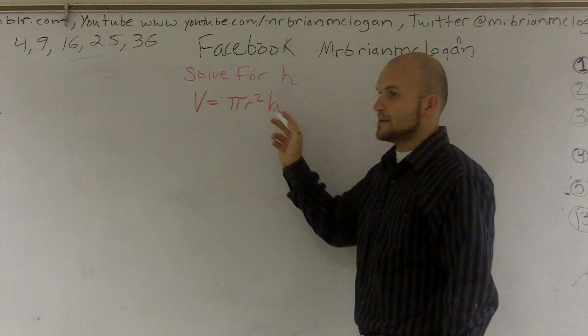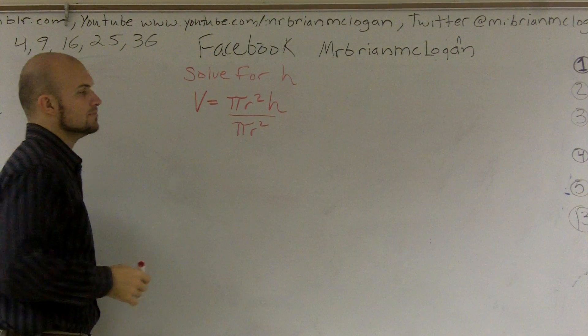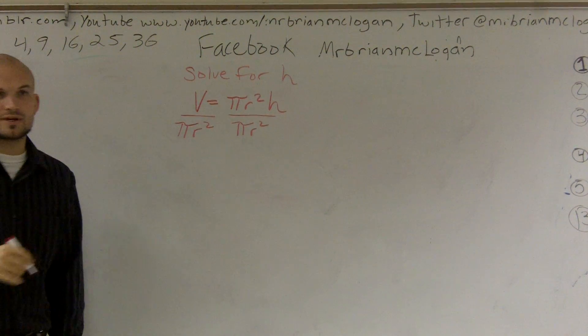So what are the two numbers that are multiplied by h? It's pi and r squared. So you can just divide them both at the same time. You can do them individually if you want to, or you can just do it at the same time.